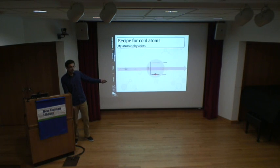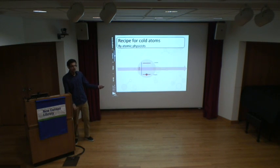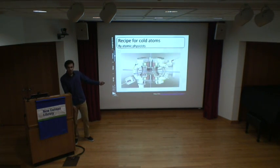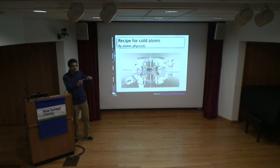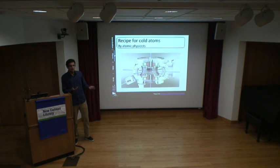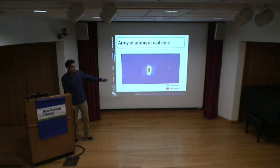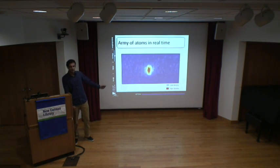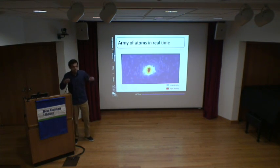In the lab, we shine six lasers from six directions, all pushing atoms toward the center where they're cooled and trapped. You can actually see this in a video: we start with a big cloud of atoms, turn on the lasers from all six directions, and as the video progresses the atoms are all pushed toward the center and cooled. This technology was first realized in 1995 and made the cover of Science magazine.